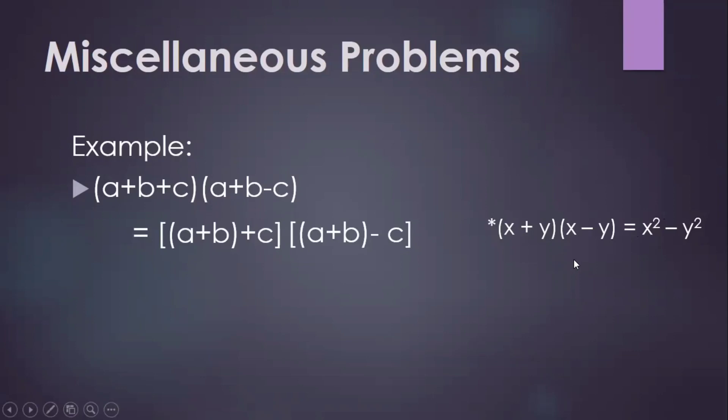And then after that, we can apply this. That will result to the difference of two squares. So a plus b here represents x, and c here represents y. So we'll be having a plus b squared, so the square of the first term, minus the square of the second term.